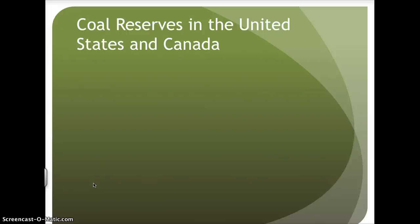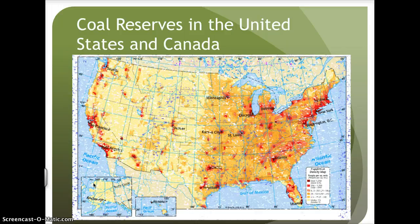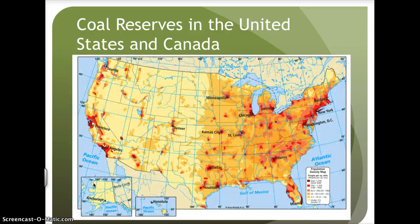Coal reserves in the United States and Canada — looking at a map, you'll see that there are several coal reserves in the United States. Notice the one along the eastern side. Looking at a population density map, there is a high concentration of people living in this area, located along the Appalachian Mountain Range. Around the 1950s and 1960s, much of this coal was extracted by hand, thus needing a large labor force.